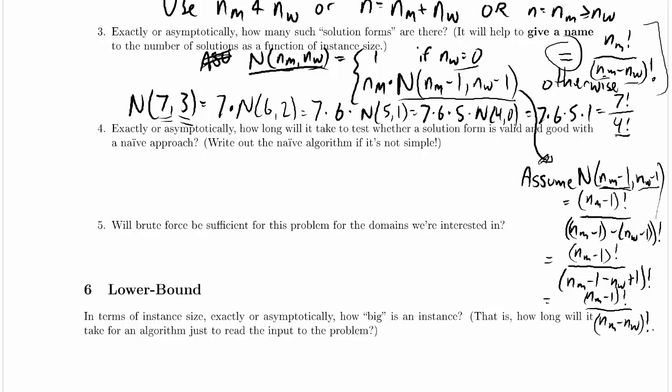And that's just nm minus 1 factorial over nm minus nw factorial. And that takes care of what I was worried about. When I was talking it through earlier, I had the denominator, the bottom, being this new ugly thing. But it's not.